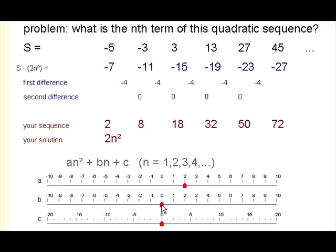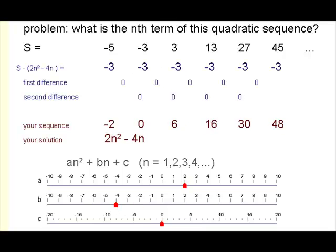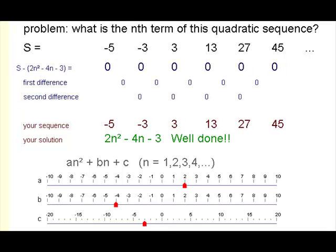This time it's a negative 4 for the linear sequence and now a minus 3 or negative 3 for the whole lot. So here is our nth term of that sequence.